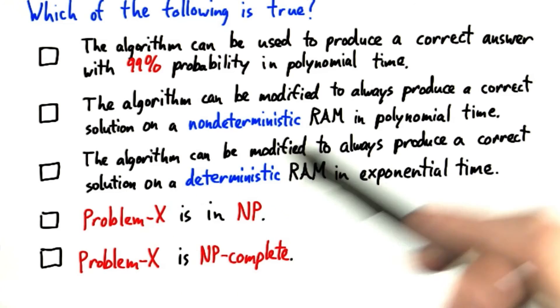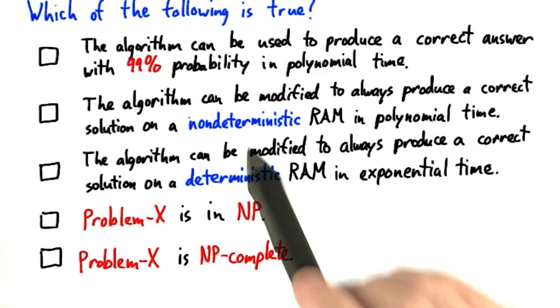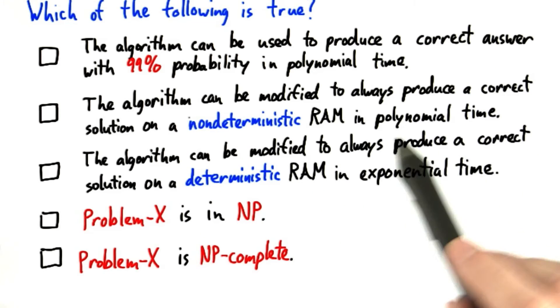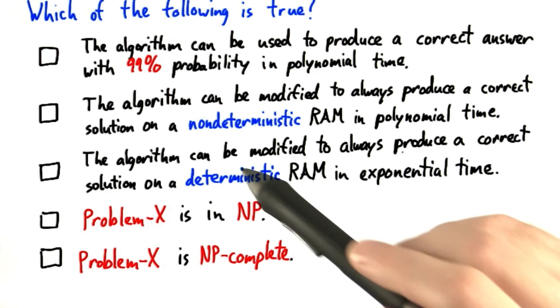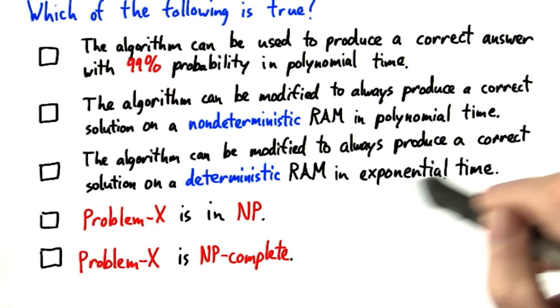That the algorithm can be modified to always produce a correct solution on a non-deterministic RAM in polynomial time. Rather, that it can be modified in the same way to produce a correct solution on a deterministic RAM in exponential time.